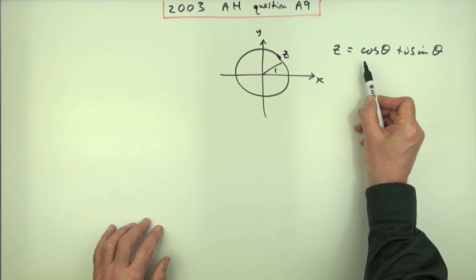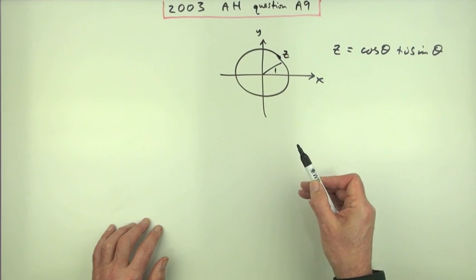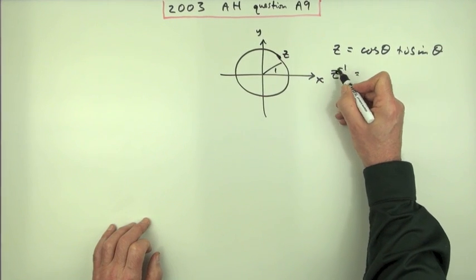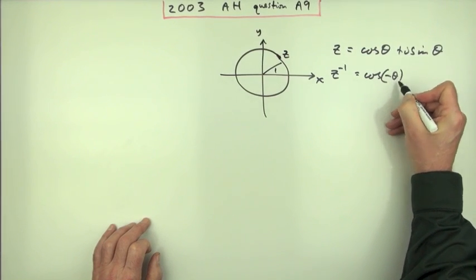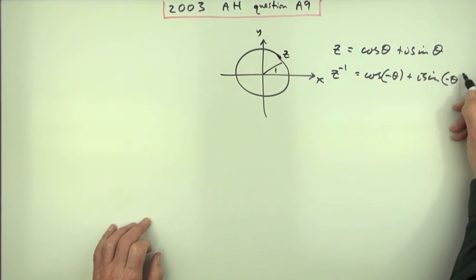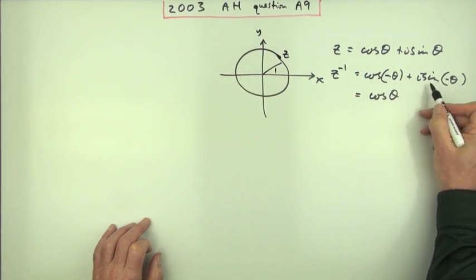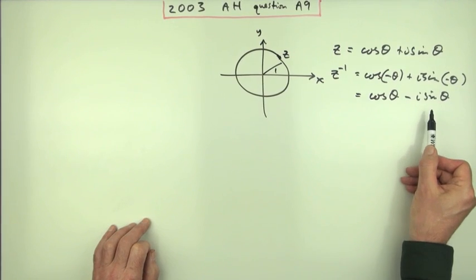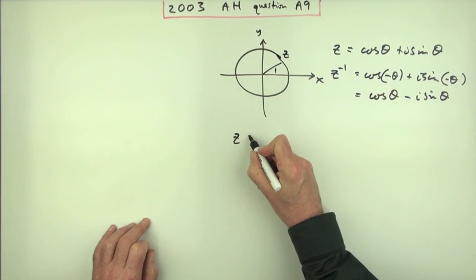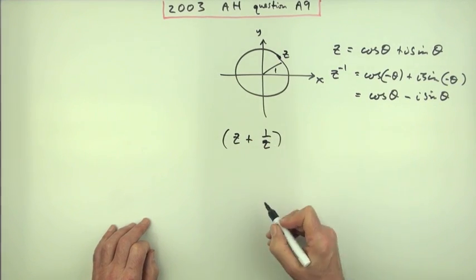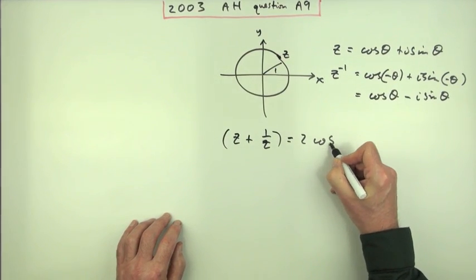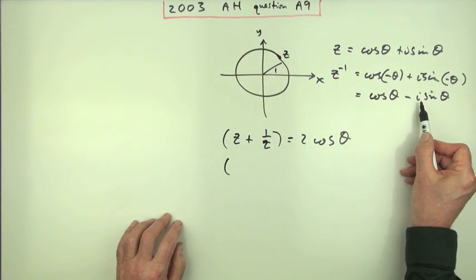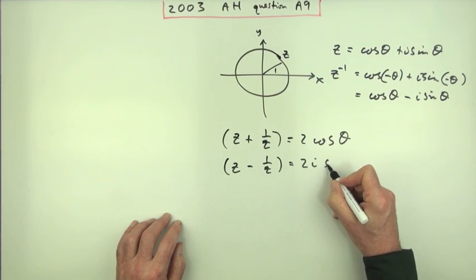Now there are transformations you commonly make later on to try and solve trigonometrical integrals, and it comes from using this. If Z equals cos θ + i sin θ, then Z to the negative one by De Moivre's would be cos(−θ) + i sin(−θ). Cosine is an even function so that's cos θ; sine is an odd function so that's −i sin θ. Adding them knocks out the sines, leaving two lots of cosine. So Z + 1/Z = 2 cos θ. Subtracting them knocks out the cosines, and Z − 1/Z = 2i sin θ.